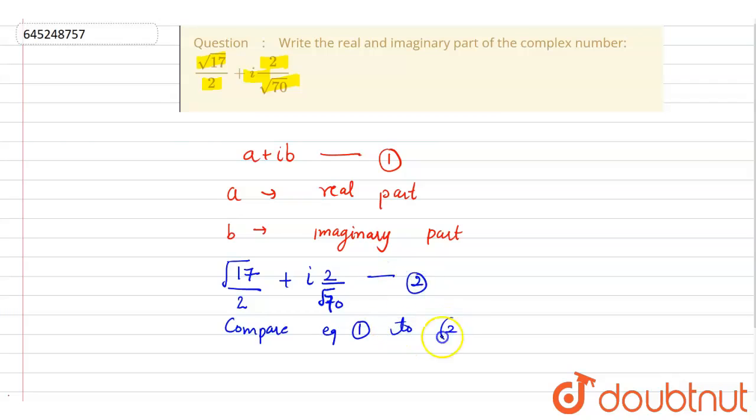So comparing, we get A as √17/2 and B as - B is with iota,